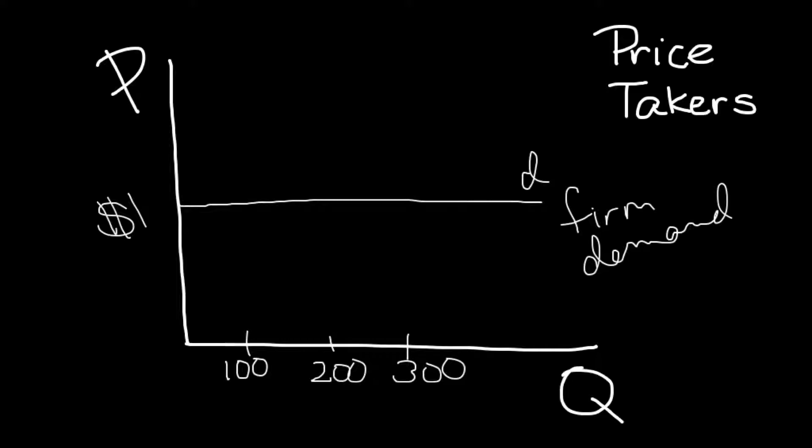And the other thing is that since the product is identical, the consumers aren't willing to pay anything more than a dollar and the firms aren't willing to sell for less than a dollar. Why sell it for 75 cents if you can get a dollar? And so you end up with this horizontal demand curve. And so this is why we call our perfect competitors price takers. They're just taking the price as given.